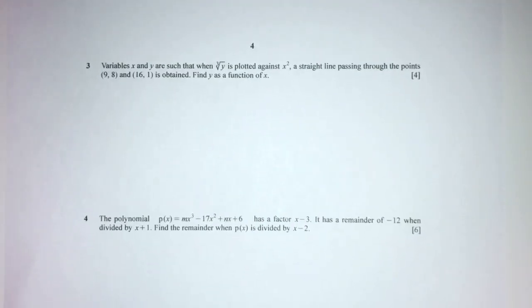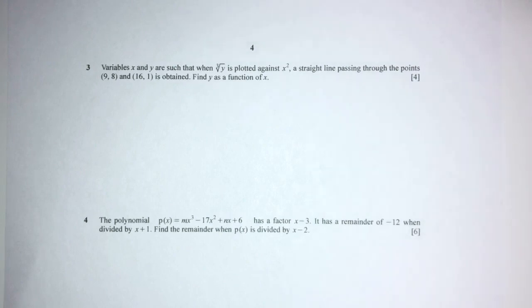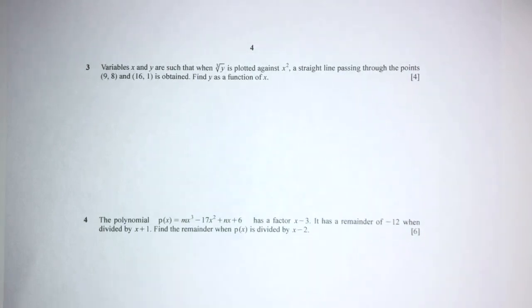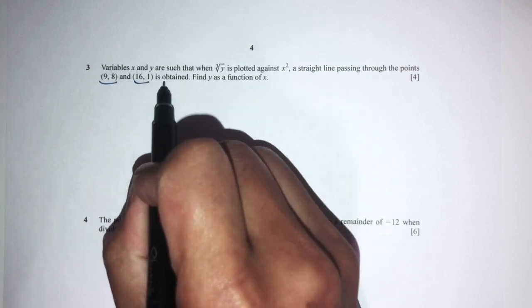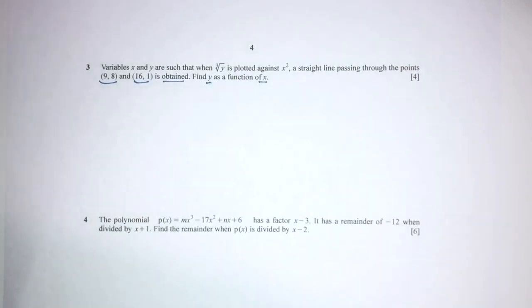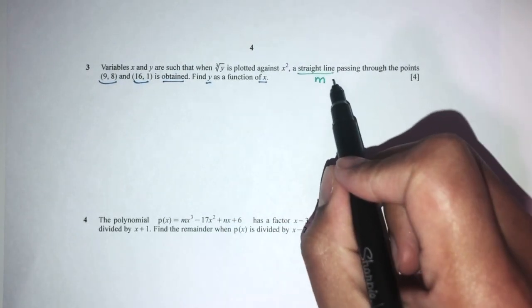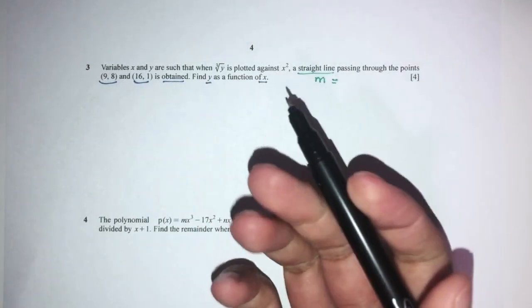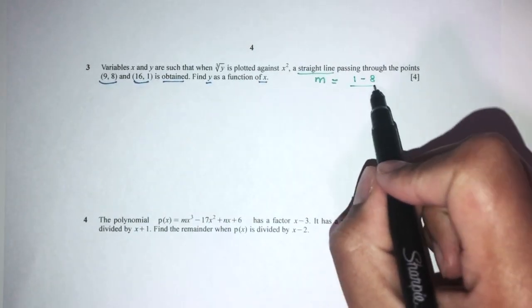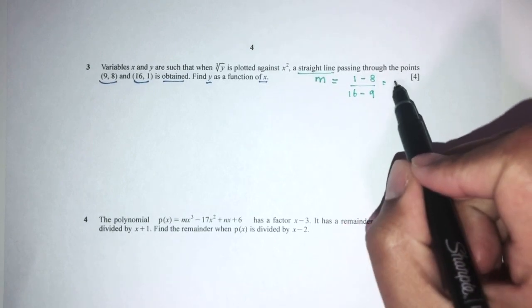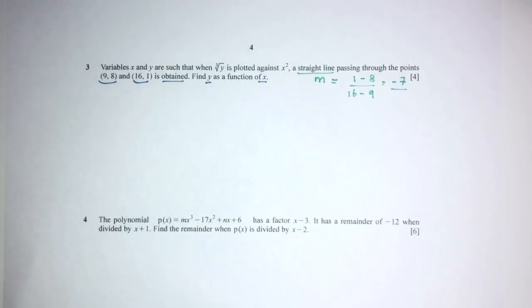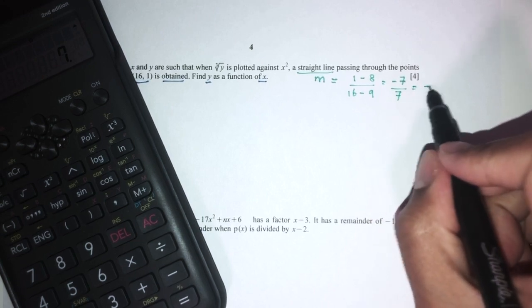Let's move on to question number 3. Variables x and y are such that when cubic root of y is plotted against x squared, a straight line through given points is obtained. We need to find y as a function of x. To find the equation of the straight line, we find the gradient using (y2 minus y1) over (x2 minus x1), which gives minus 7 over 7 — so the gradient is minus 1.